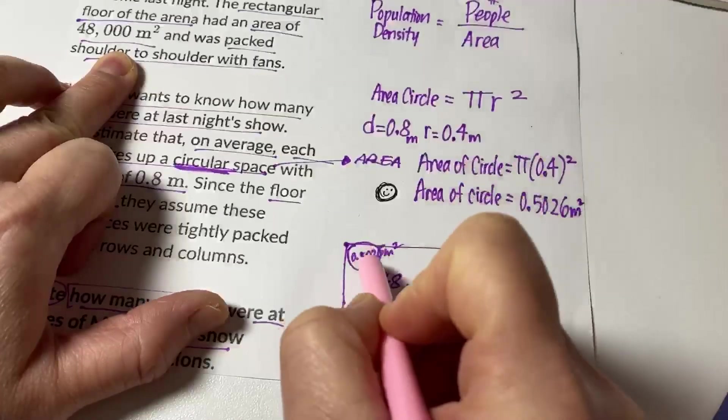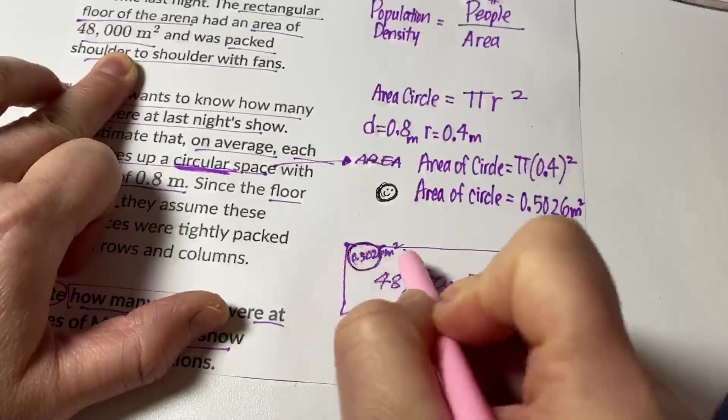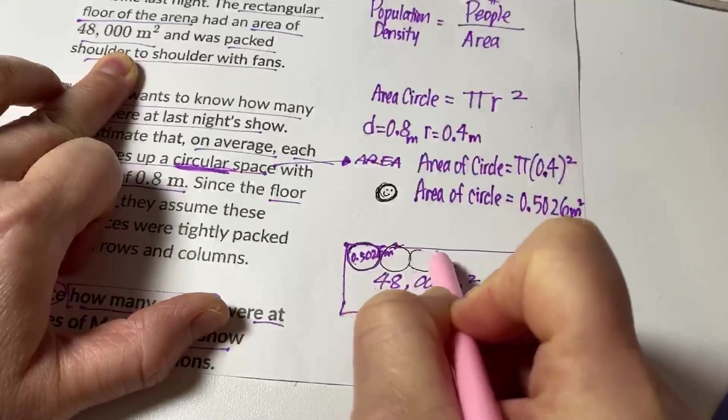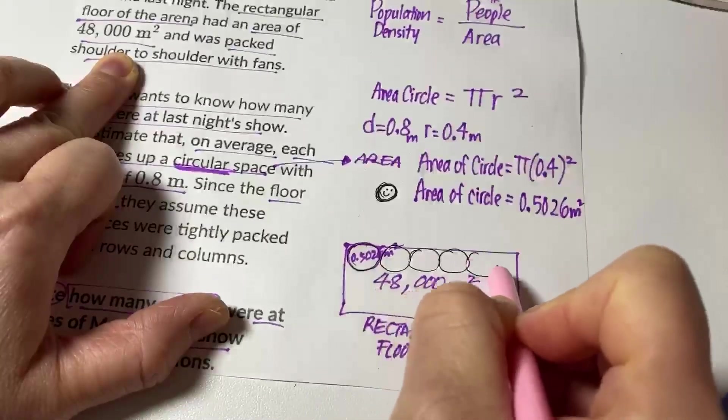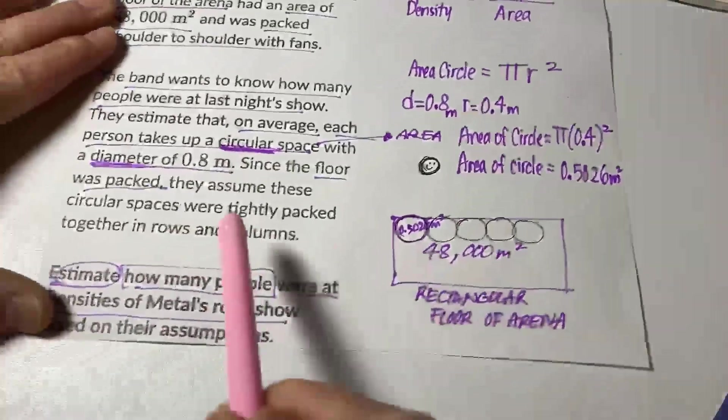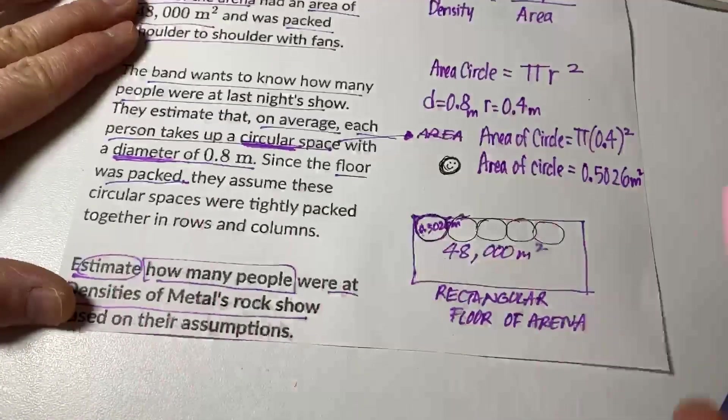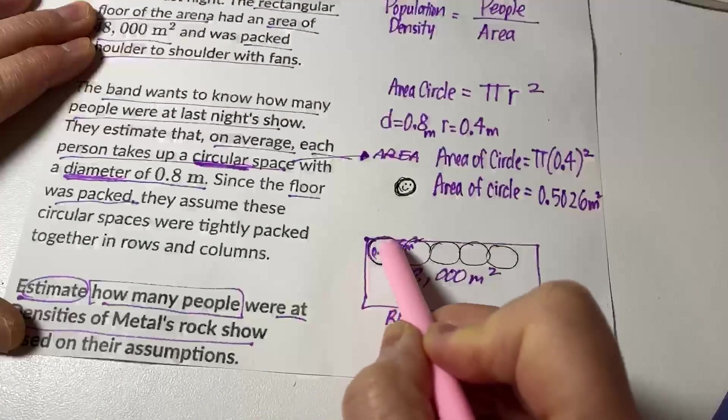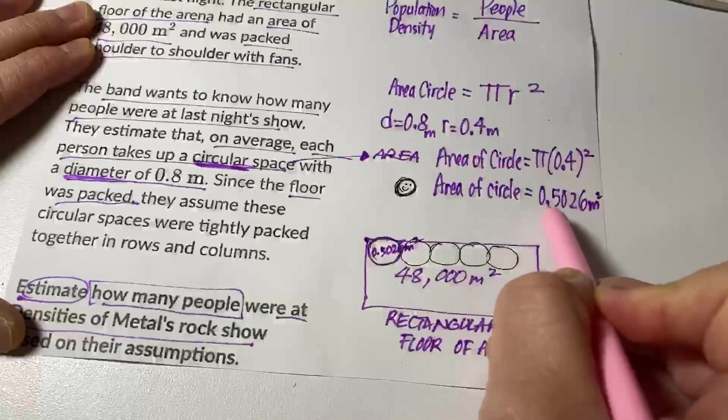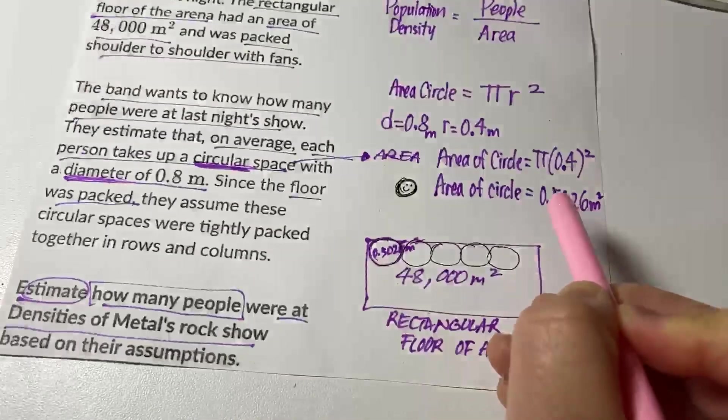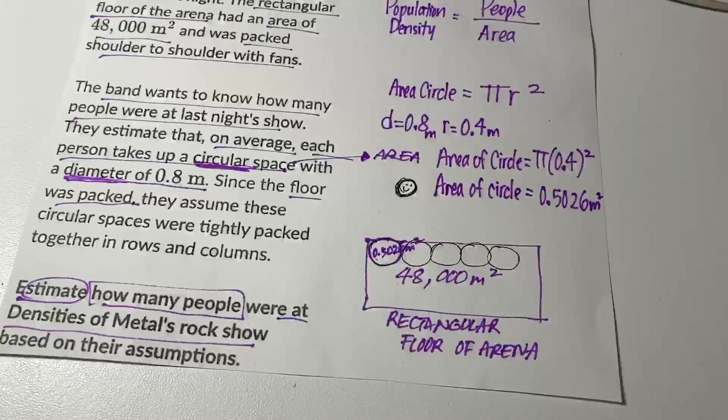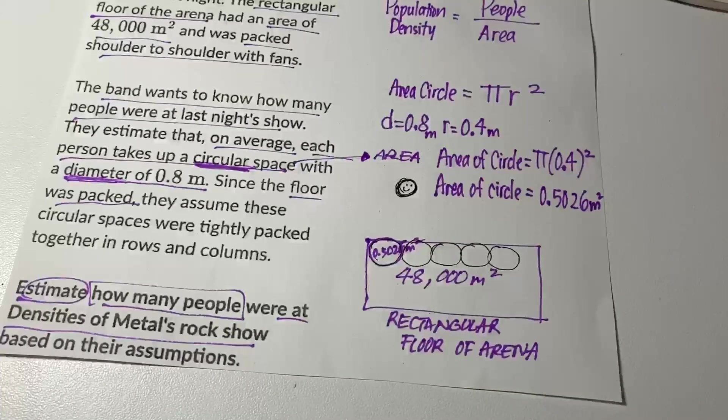Now once again, they're saying the fans were taking up circular spaces inside this rectangular floor arena, and they were tightly packed. So now if one of these is a person, and this is the amount of area they took up, in order to figure out about how many people attended this rock concert...